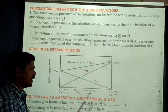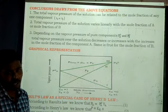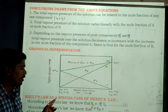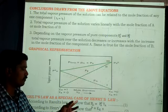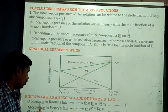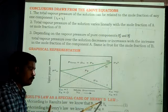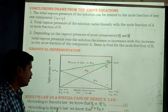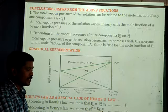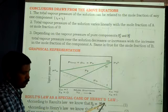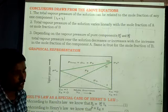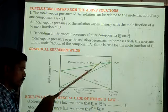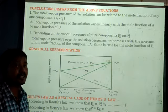Raoult's Law as a special case of Henry's Law. If you consider Raoult's Law, we have two laws: Henry's Law and Raoult's Law. According to Raoult's Law: PA = PA⁰·XA. According to Henry's Law: P = KH·XA. The pressure and mole fraction are the same in both; the only difference is the constant — PA⁰ in Raoult's Law versus KH in Henry's Law. Because of this, Raoult's Law is a special case of Henry's Law.